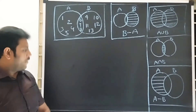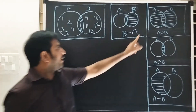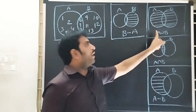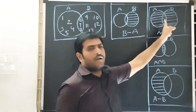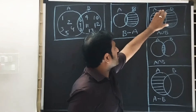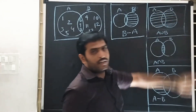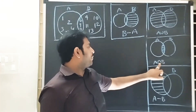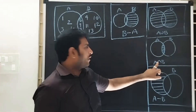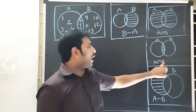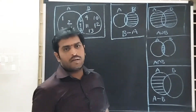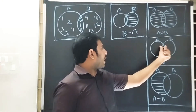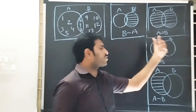First one is A union B — collecting all elements in the total space. A intersection B — collecting common elements in the two circles' common space.